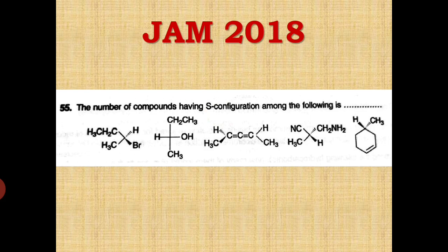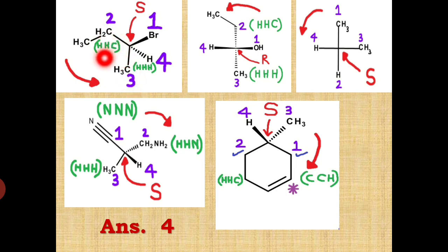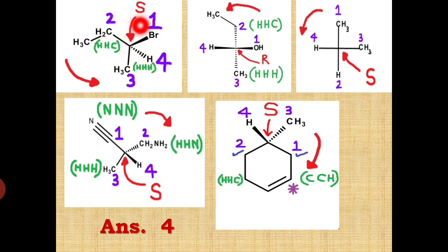Let us see the solution. In the first molecule, the chiral carbon is attached to four primary atoms: carbon, carbon, bromine, and hydrogen. First priority goes to bromine as it has the highest atomic number. Between the two carbons, one carbon is attached to hydrogen, hydrogen, carbon as secondary atoms, and the other carbon is attached to three hydrogens. Since carbon has higher atomic number than hydrogen, the first carbon gets second priority and the other gets third priority; hydrogen gets fourth. Moving from 1 to 2 to 3 is anti-clockwise, and the fourth priority group is on the dash bond — so the absolute configuration is S.